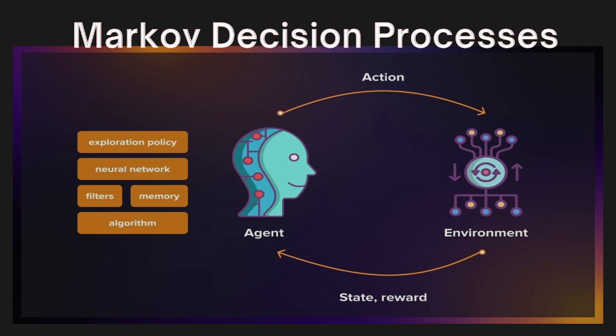Hey everyone, welcome back to the reinforcement learning series. Today we're talking about a cornerstone concept in reinforcement learning: Markov Decision Processes, or MDPs. This is the foundation that allows agents to interact with their environment, learn, and maximize their rewards. Before we get started, if you haven't watched the first part of this series where we introduced the basics of reinforcement learning, I highly recommend you check it out first. It'll give you the foundation you need to fully understand today's topic. You can find the link in the description or in the cards above.